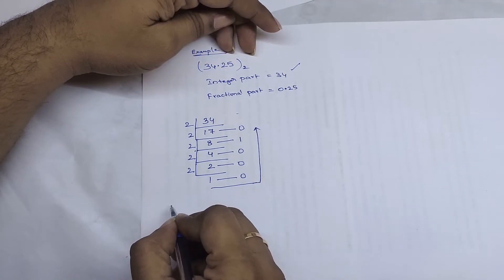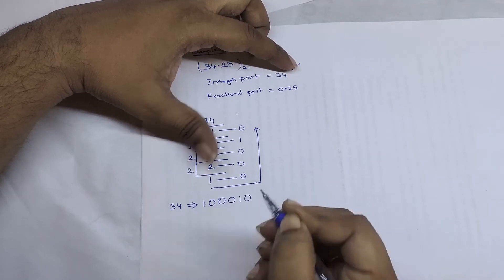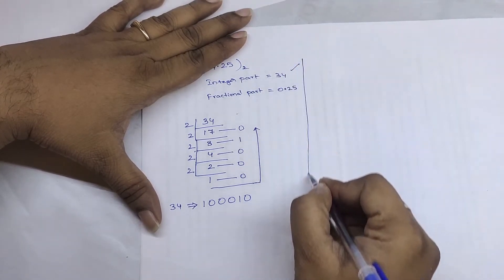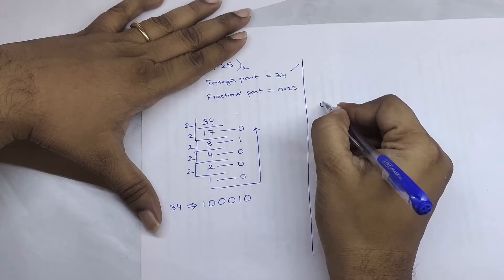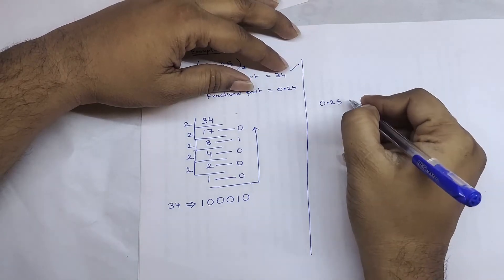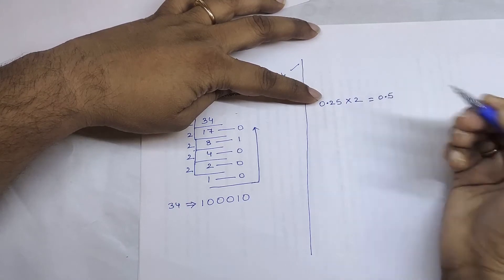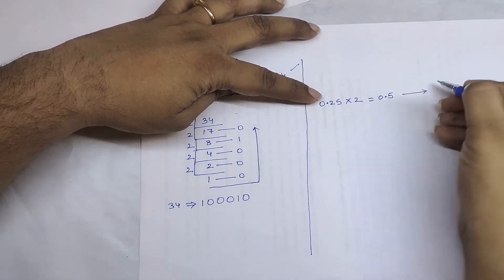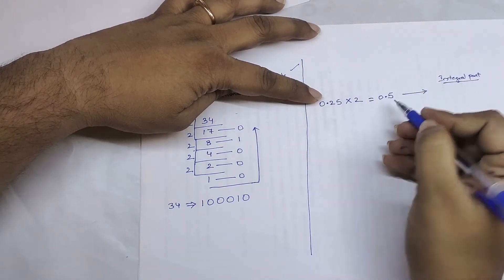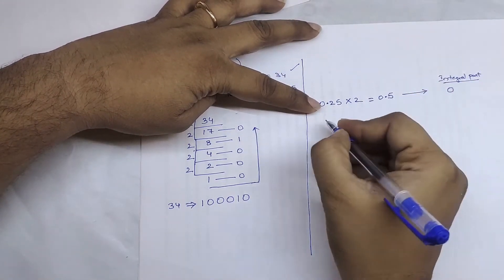The binary equivalent of 34 is 100010. Now consider the fractional part 0.25. We multiply it by two: 0.25 × 2 = 0.5. Now store the integral part here — the integral part is 0. Again take out the fractional part, which is 0.5.